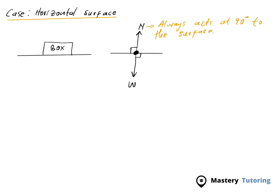To find the frictional force, we first calculate the sum of the forces in the vertical direction. Using our Cartesian plane, upwards is positive y and to the right is positive x. The sum of the forces in the y direction equals zero, because the object does not move up or down — it stays on the surface.